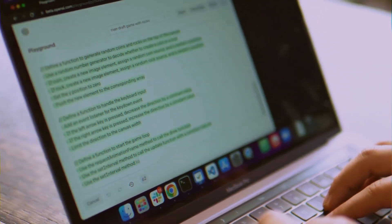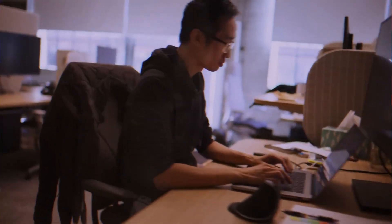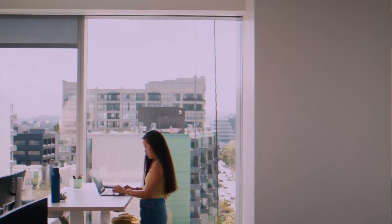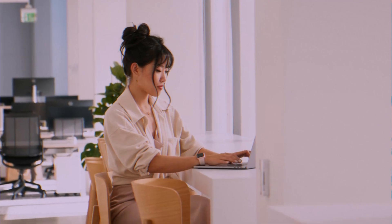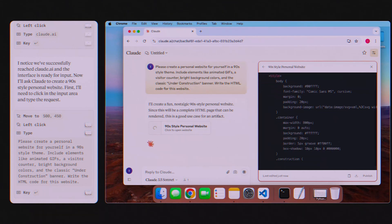This all sounds incredible in theory, but does it actually work in practice? To find out, the MIT researchers put this self-teaching AI to the test in a task that stumps most AIs – learning brand new facts on the spot and remembering them forever. The first major test for SEAL was all about knowledge. Could it read a passage of text and truly internalize the facts to the point where it could answer questions about it later without ever seeing the passage again? This is the holy grail of AI learning – moving from temporary memory to permanent knowledge.